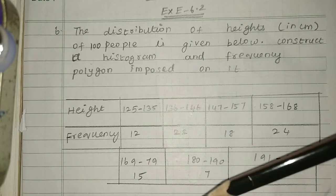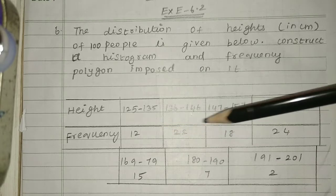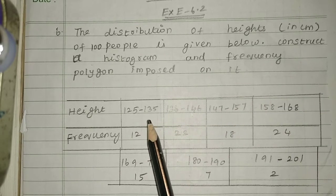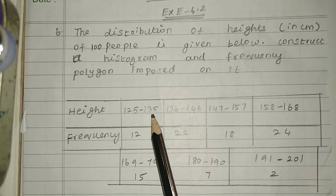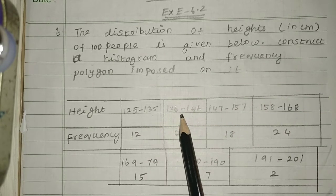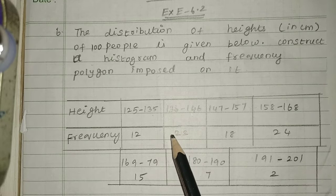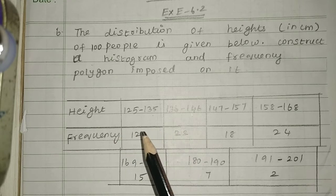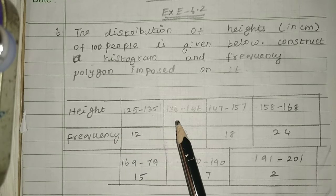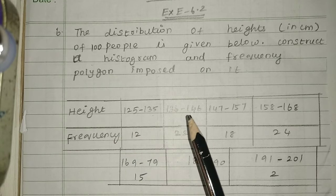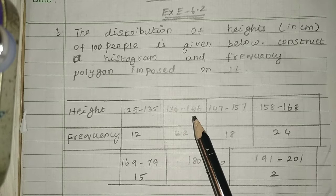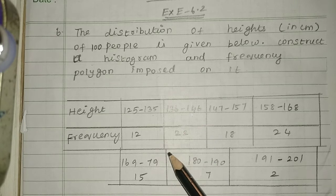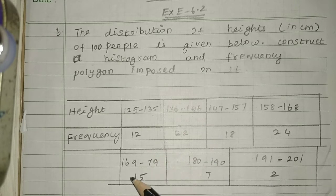First of all, we need to check whether the heights are continuous. If they are not continuous — that is, if there is a gap between class intervals — then we need to apply the formula to convert them to continuous, and then frame a new table.